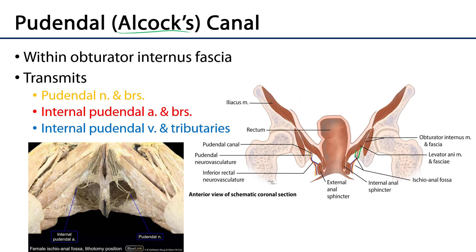Here we can see the pudendal nerve and some of its branches serving the external anal sphincter, as well as branches serving other elements of the perineum. We can also see the internal pudendal artery coming out from the same place on the ipsilateral side, also having branches that serve many different areas of the perineum.